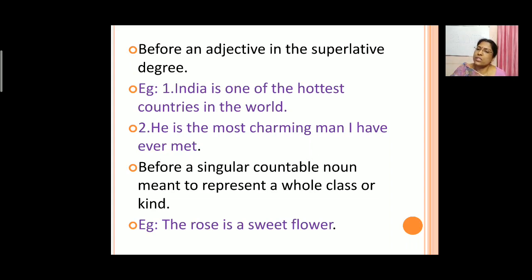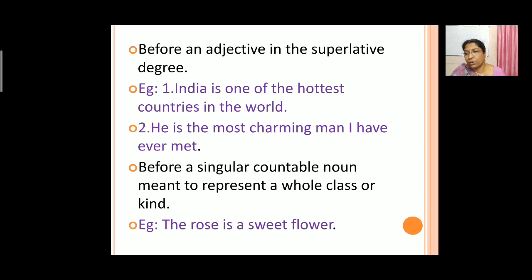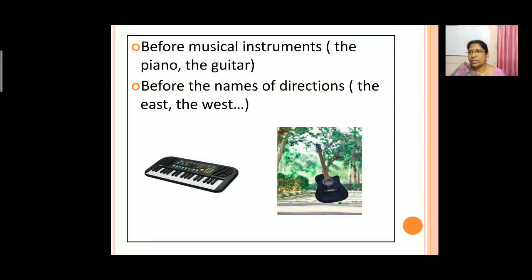'The' is also used before a singular countable noun meant to represent a whole class or kind. So when you are going to represent the whole class or whole kind, then 'the' is used. For example: the rose is a sweet flower. 'The' is also used before musical instruments — the piano, the guitar. And 'the' is also used before directions — the east, the west, the north, and the south.